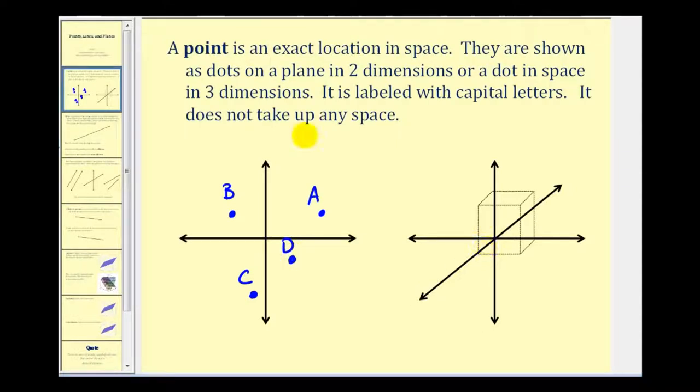Now if we plot points in three dimensions, we would have three sets of axes. And to give it a three-dimensional perspective, we often construct a box to represent where that point is in space. So if we had a point here, let's call it point E, this box is supposed to give it a three-dimensional perspective. And I have another video on how to plot points in 3D. And it can sometimes be challenging to give something a three-dimensional perspective on a flat screen.